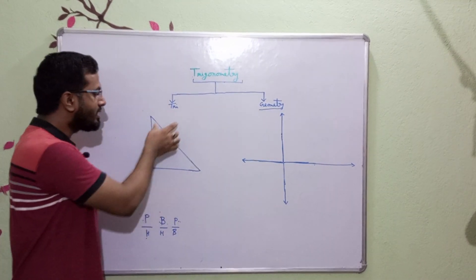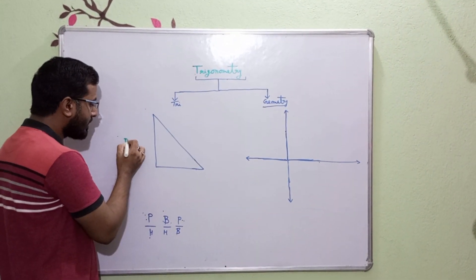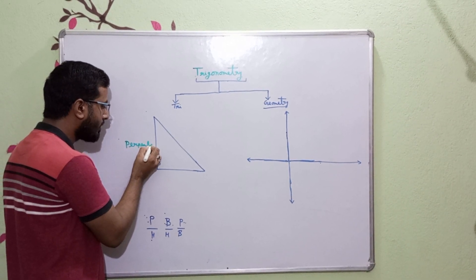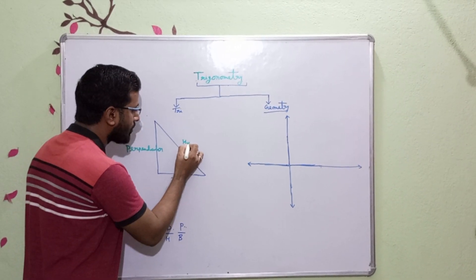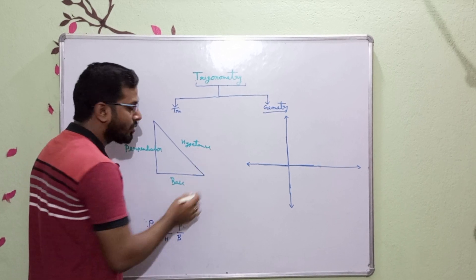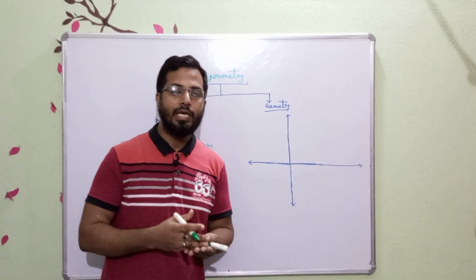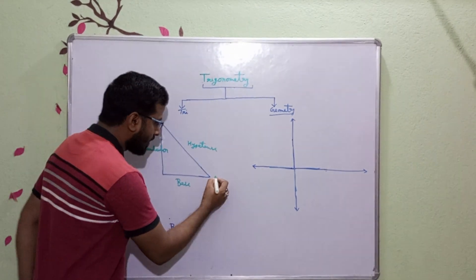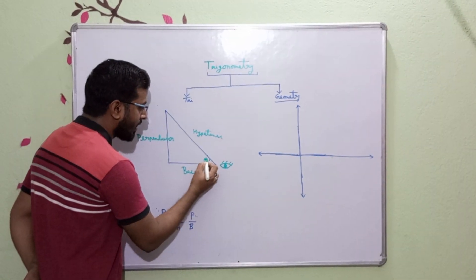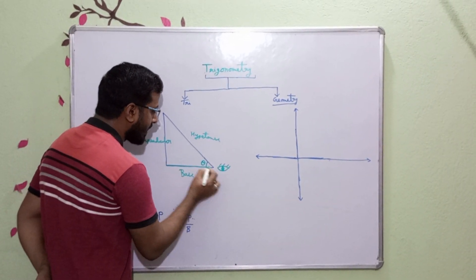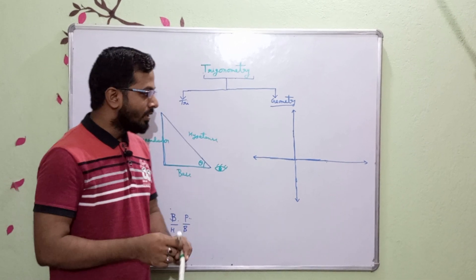Here 'tri' represents the three sides and the angle. The three sides are: the perpendicular, the base, and the hypotenuse. How can you identify which one is the perpendicular, which one is the base, and which one is the hypotenuse? When a person is seeing from one side and there is the angle theta, this one is the base and the opposite side is the perpendicular.